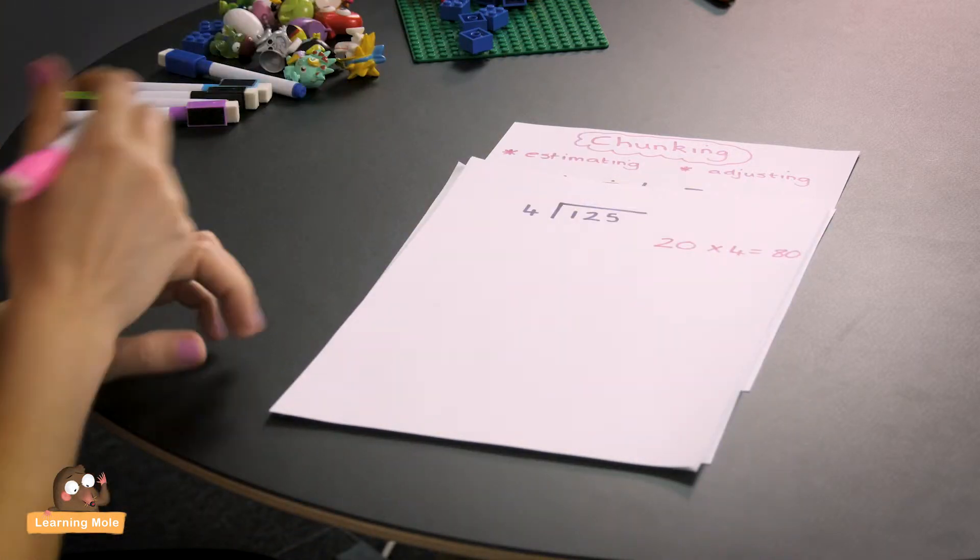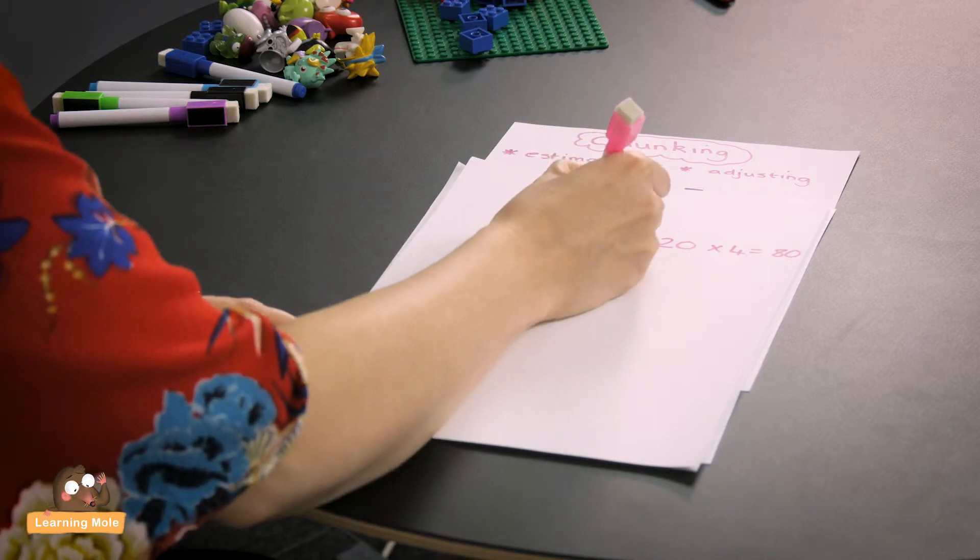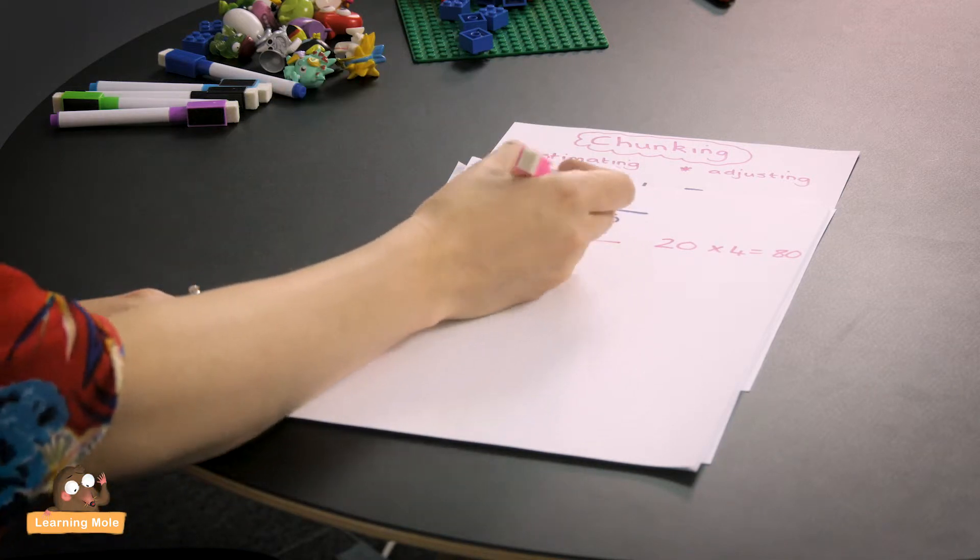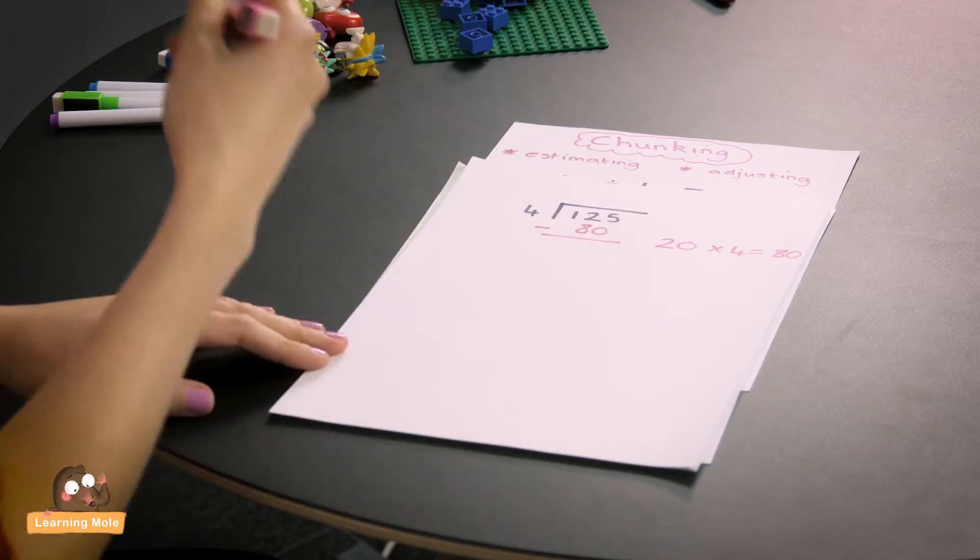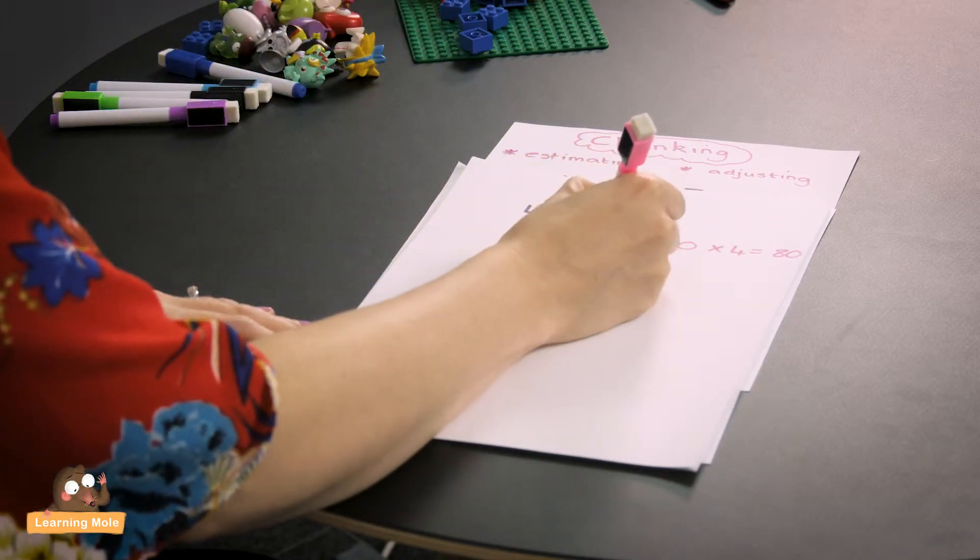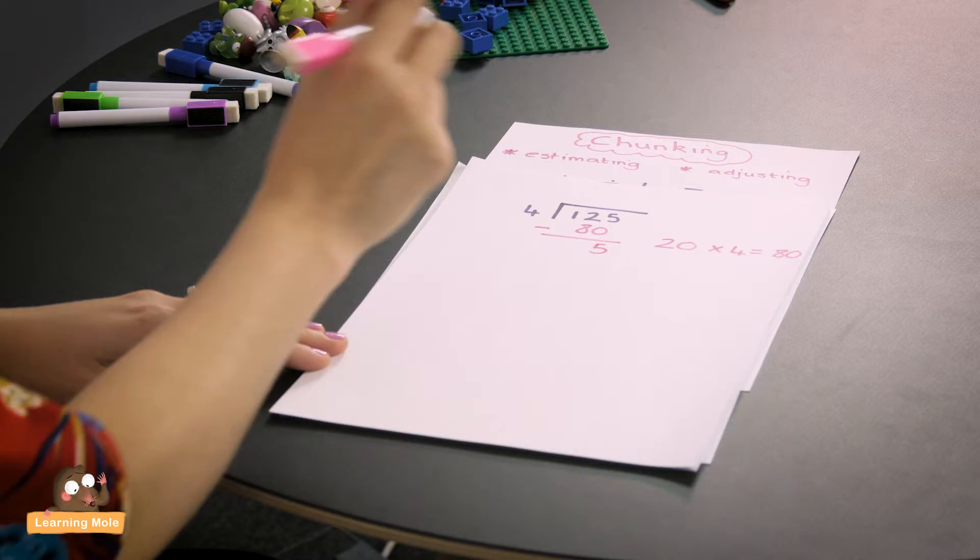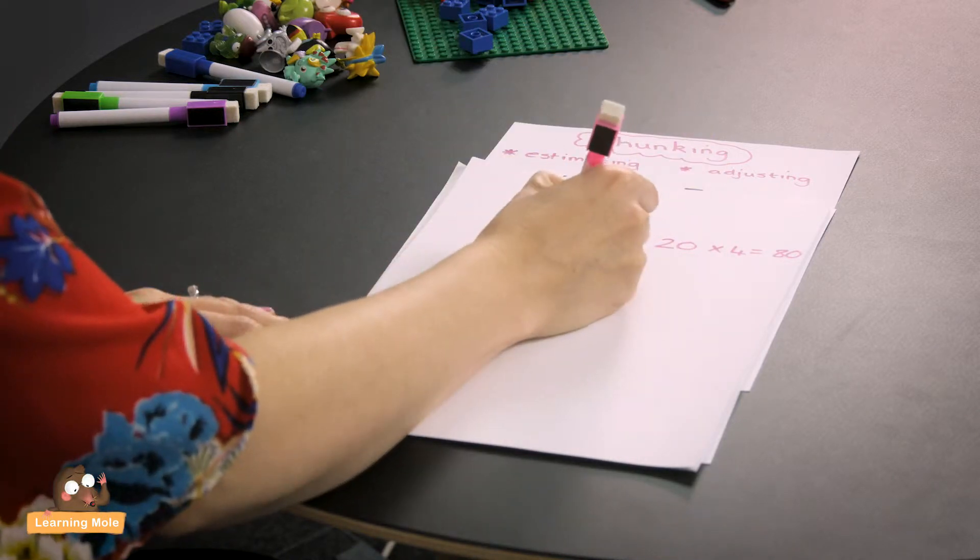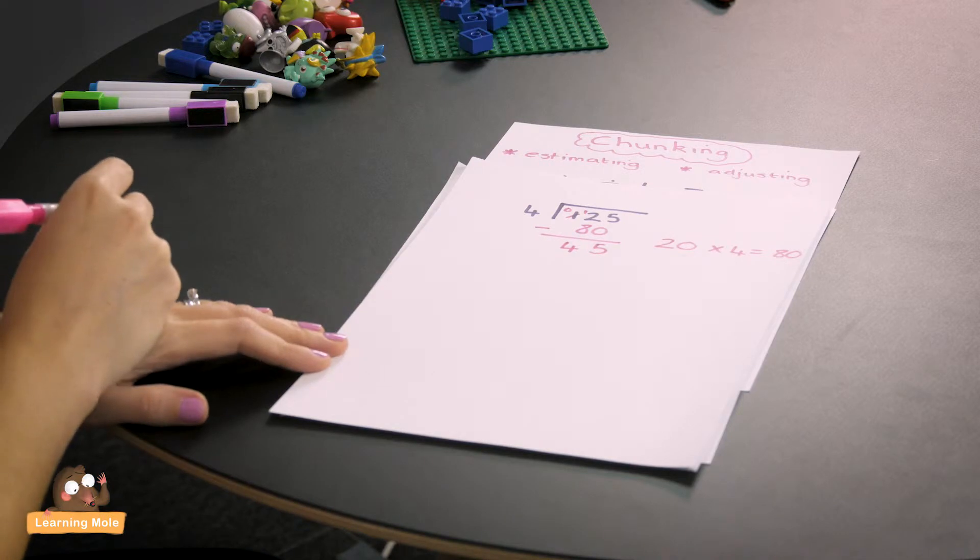This is where we do our taking away. So I'm going to do 125 take away 80. Now be very careful at this stage that you're showing your child to make sure they're lining up their columns because this is just pure subtraction. 5 take away 0 is 5. 2 take away 8, I can't do it so I'm going to have to borrow. So 12 take away 8 is 4 and my answer is 45.